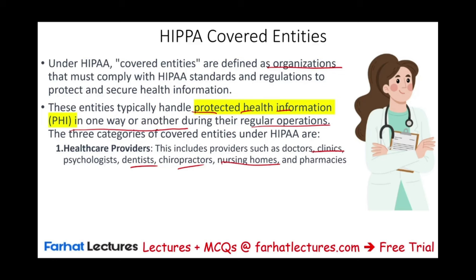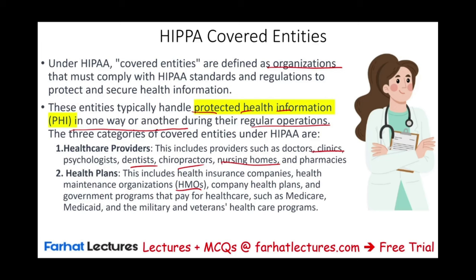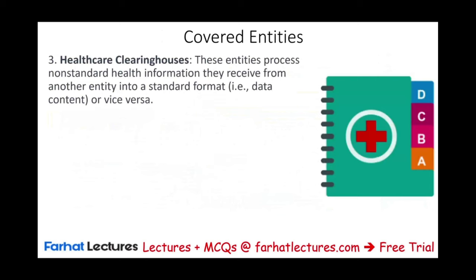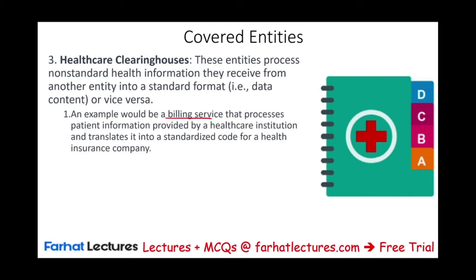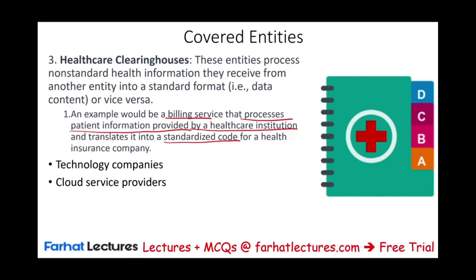Second, health plans: HMOs and health insurance companies, company health plans, and government programs that pay for healthcare such as Medicare, Medicaid, and military and veteran healthcare programs — all fall under HIPAA because they have your PHI. Third, healthcare clearinghouses: entities that process non-standard healthcare information received from another entity, such as billing services or customer service departments that translate patient information into standardized codes.